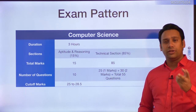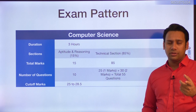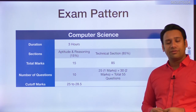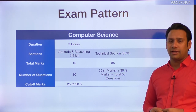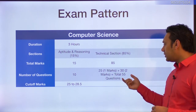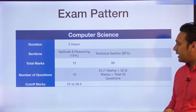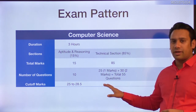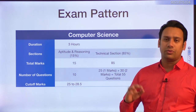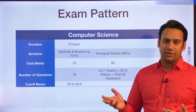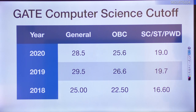The total number of questions in the paper is 65. Of these, 10 questions are from aptitude and reasoning and 55 questions are from the technical section. These 55 technical questions are further divided: 25 questions are of 1 mark each and the remaining 30 questions are of 2 marks each.